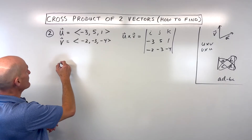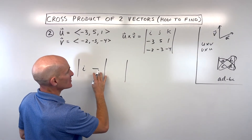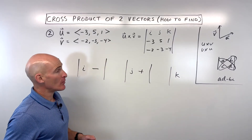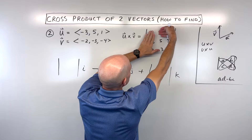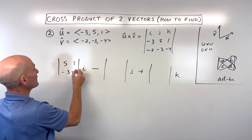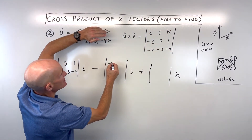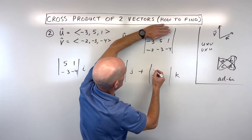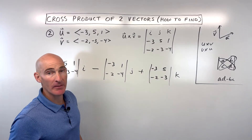What I like to do is set it up first — draw my two-by-two matrices: i minus j plus k, remembering that the middle one is negative. The way we find these matrices is we cross out the row and column that go through i. The minor matrix we're left with is 5, 1, -3, -4. Cross out the row and column through j, and that minor matrix is -3, 1, -2, -4. Then cross out the row and column through k, and that minor matrix is -3, 5, -2, -3.